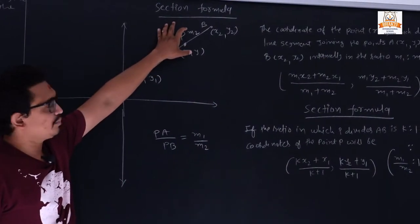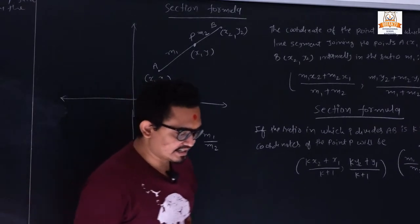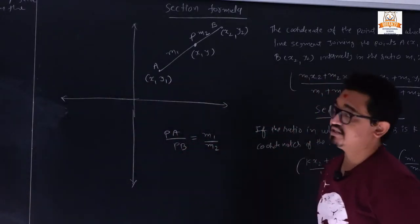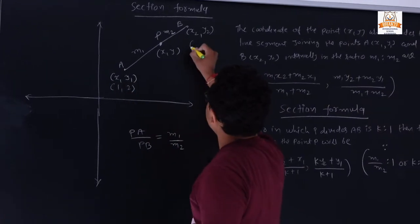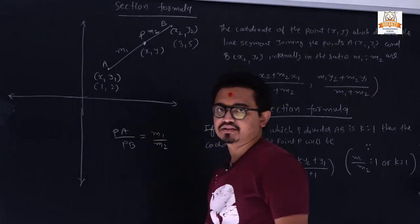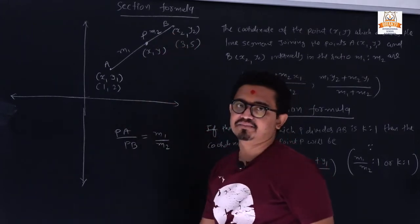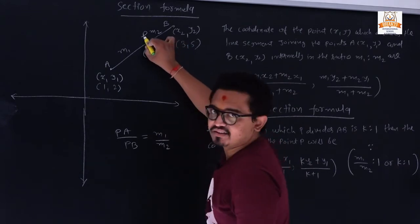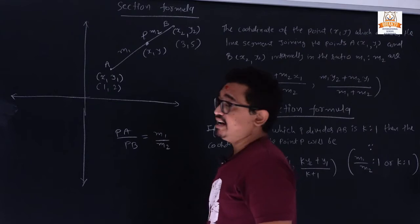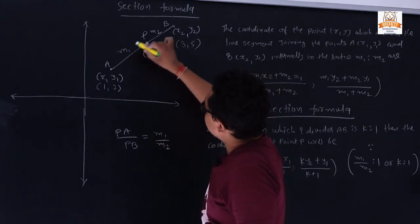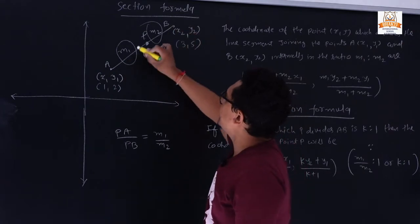Now the new topic of chapter number 7 is the section formula. Before learning the section formula, first of all we are taking two points: suppose A is 1 comma 2 and B is 3 comma 5. I want to take a point P which is not equidistant from A as well as B, and this point divides this line into two different sections.